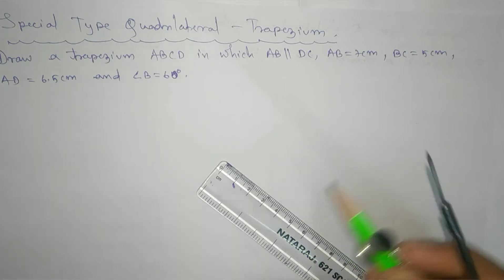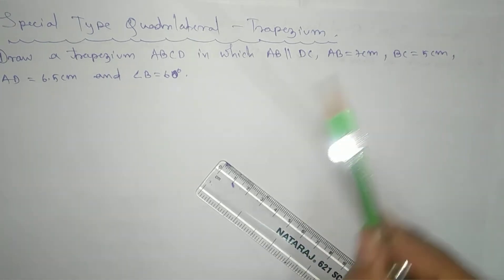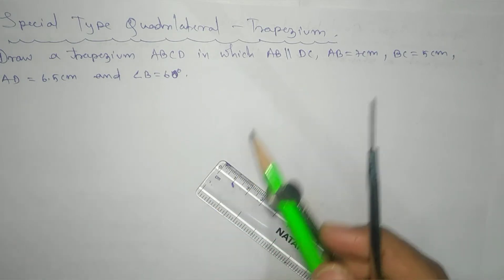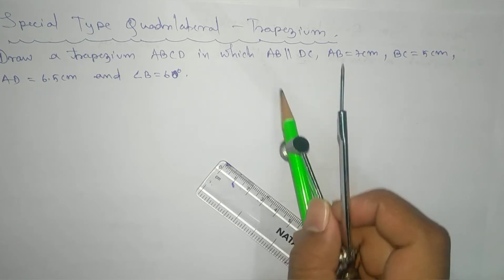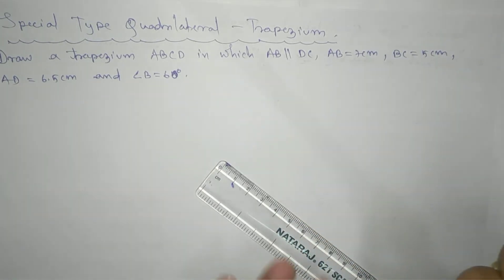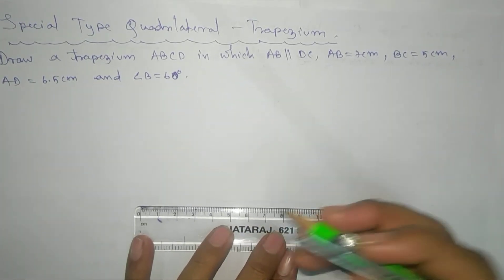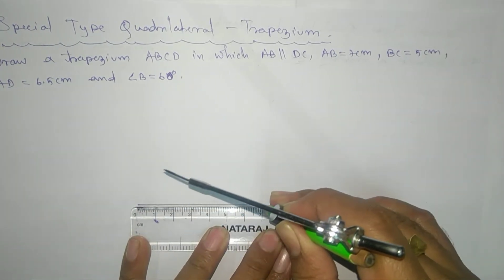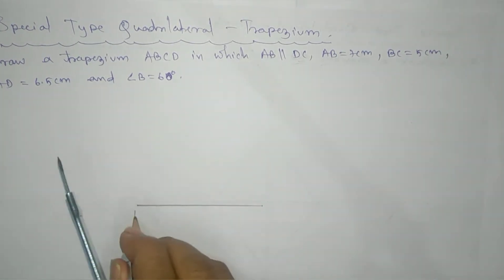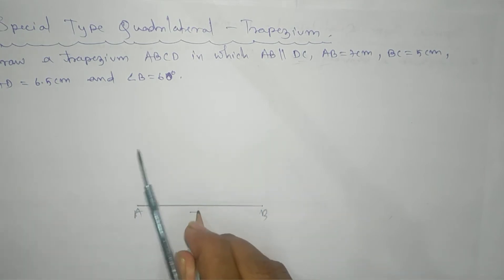So we can take here the base. We'll go for AB as a base. As we can see that AB is parallel to CD, we don't have any data for CD, so we go for AB as base. So we'll take that as 7 cm. We'll construct line segment that is 7 cm for AB, and we'll mention here AB equals 7 cm.